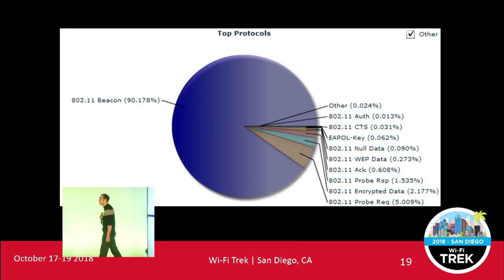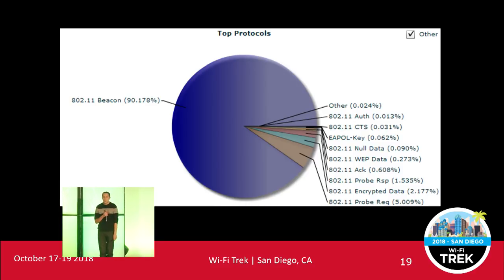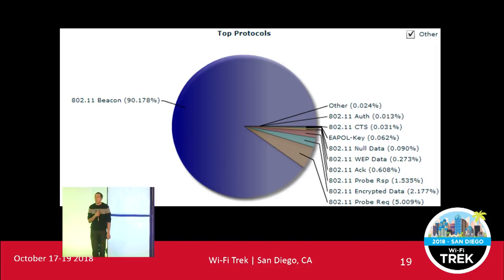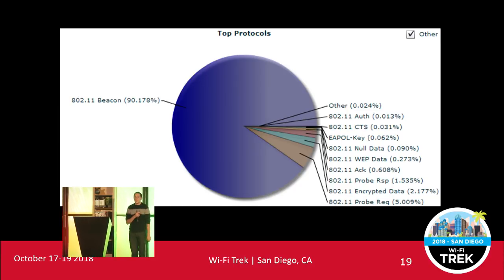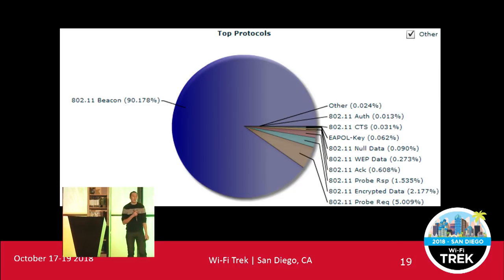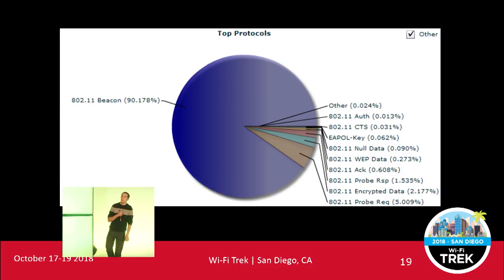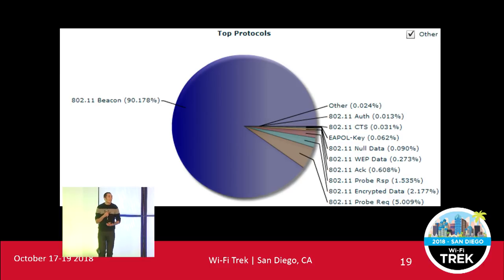Let's look at the protocols on that network: 90% of all protocols were beacon frames, and a further 5% were probe requests. Only then was the third most popular protocol encrypted data frames at 2.1%. What do we know about beacons and probe request frames? They're broadcast frames. Are broadcast frames acknowledged? Will a broadcast frame ever be retransmitted? No. So if most of my traffic is broadcast, is it really a true reflection to say my retries were less than 10%?